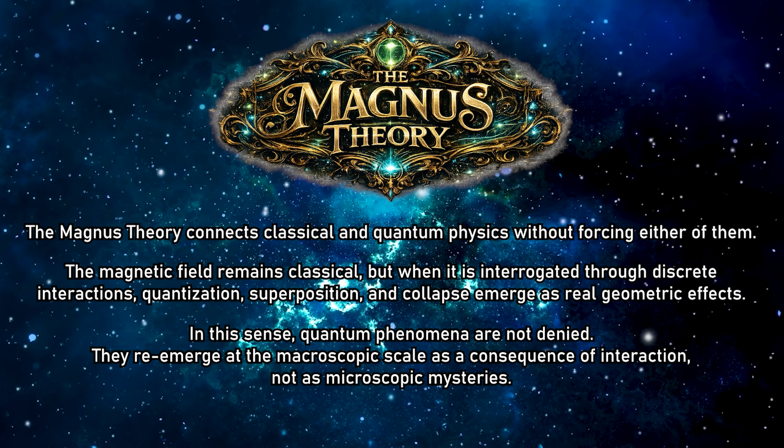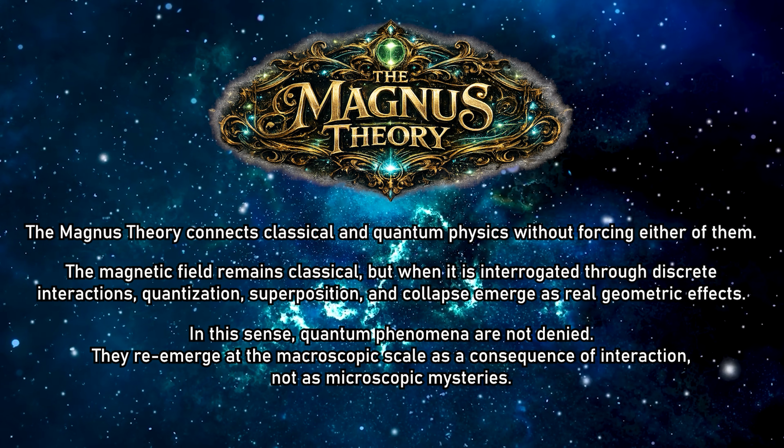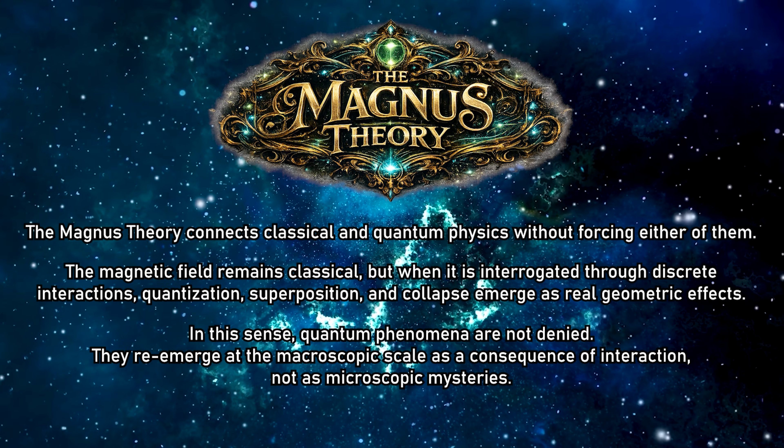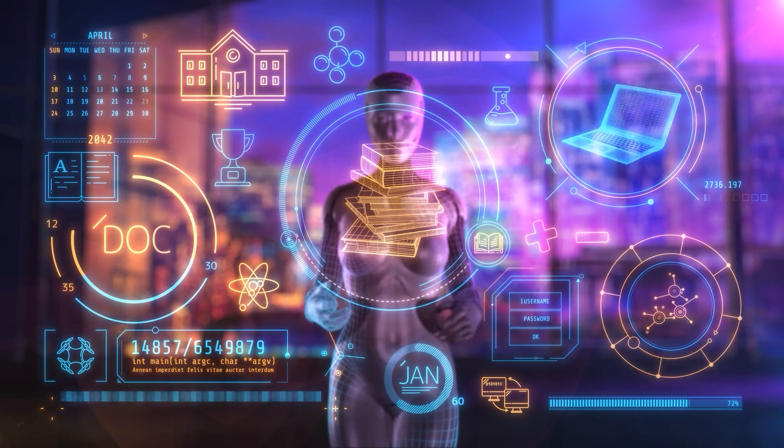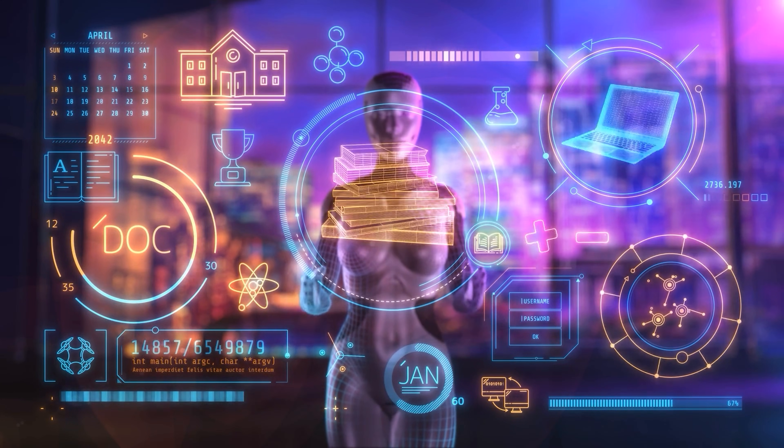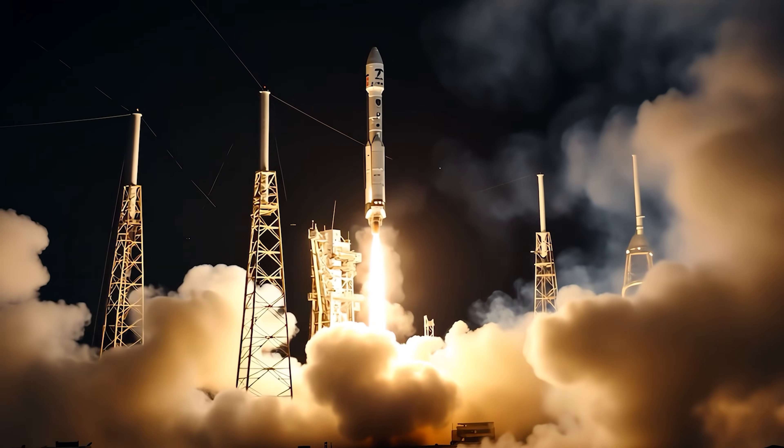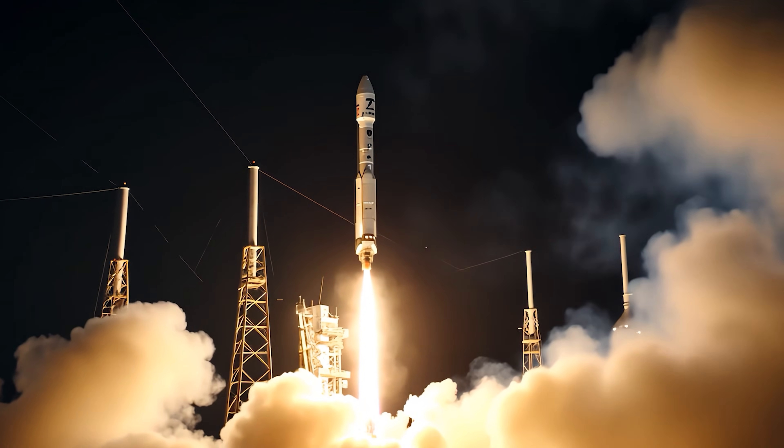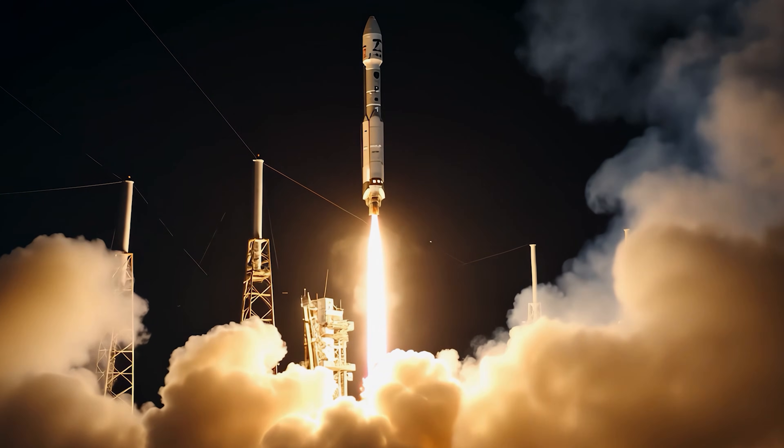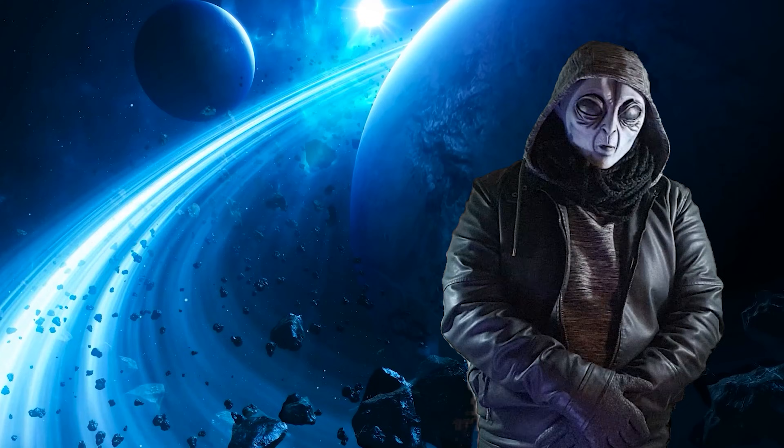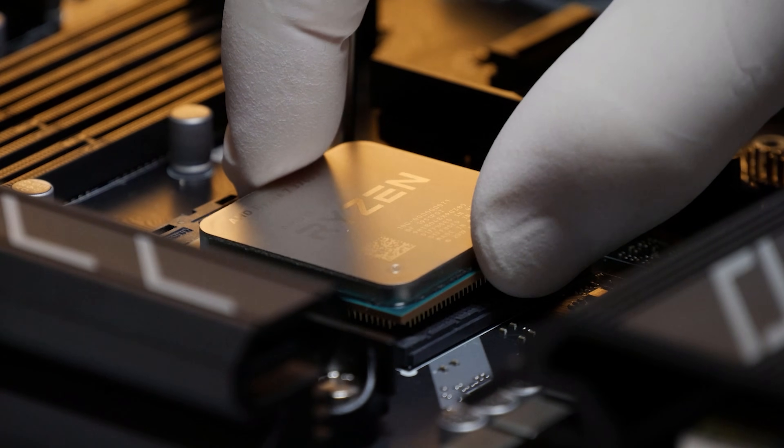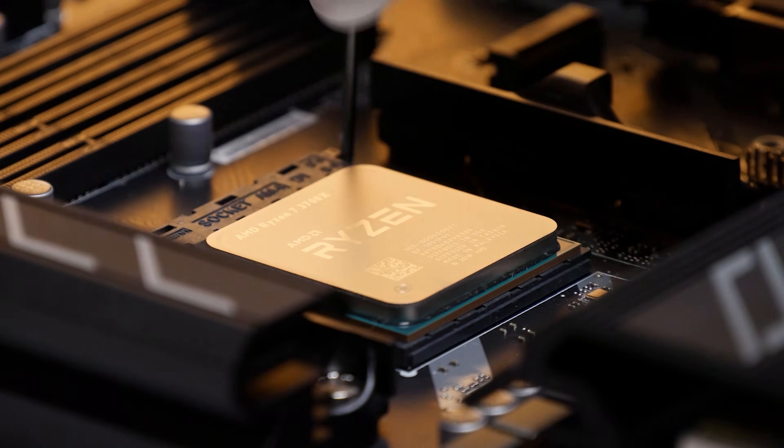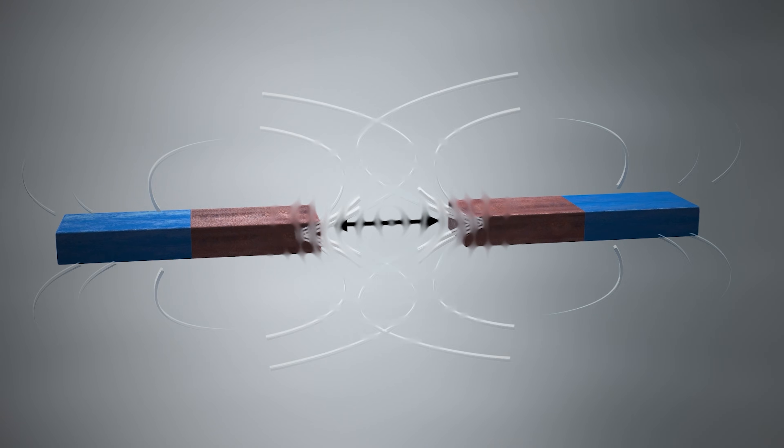In this sense, quantum phenomena are not denied. They re-emerge at the macroscopic scale as a consequence of interaction, not as microscopic mysteries. But as you have surely understood, the most important thing is this. Regardless of the explanation, from now on, we have the possibility to do something exceptional. A model does not need to be absolutely true. It needs to work. And above all, it must open possibilities that did not exist before. And don't worry, in the next videos, we will go deep into how to exploit this information in truly absurd ways. This is only the beginning. Science does not advance when it defends a language. It advances when it chooses the one that works best. Perhaps the next leap will not be a new equation, but a new way of thinking about what has always been right in front of our eyes.